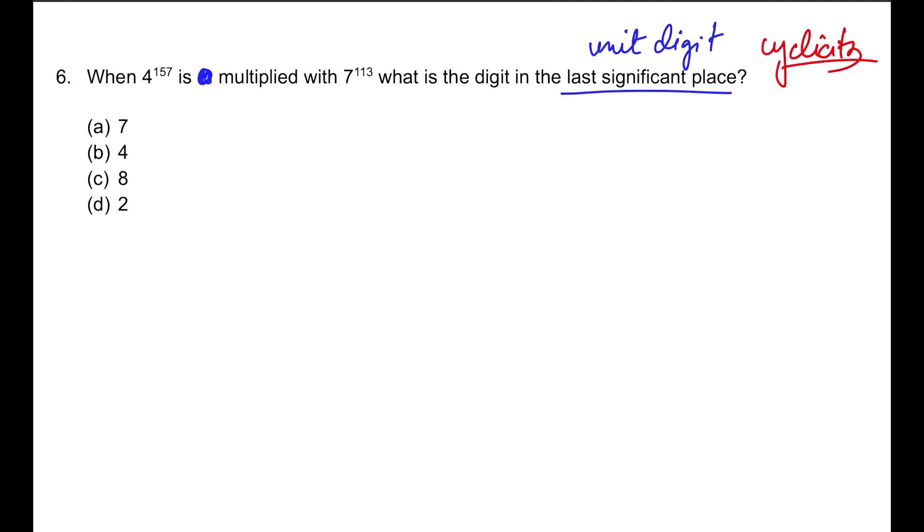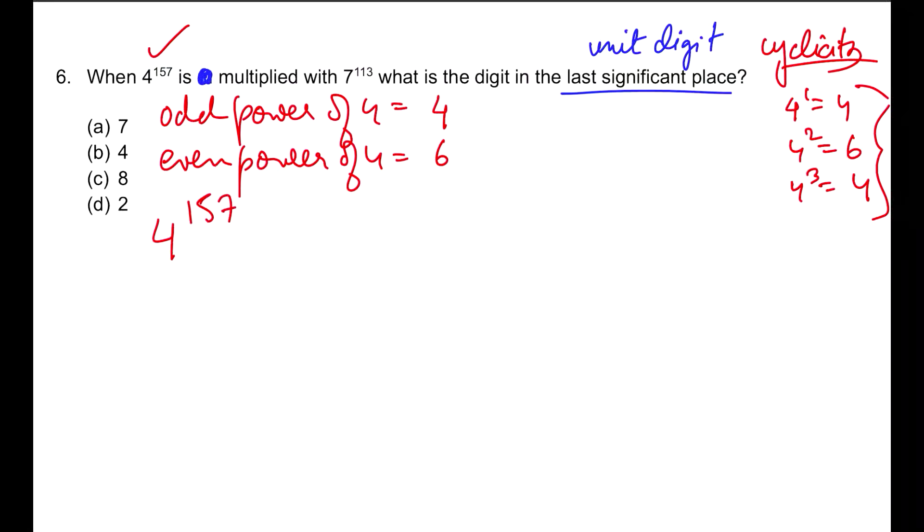Cyclicity. If you check the powers of 4: 4¹=4, 4²=16 ends in 6, 4³=64 ends in 4. You'll see a repeating pattern of 4, 6, 4, 6. That means in every odd power of 4, we get the last digit as 4, and for every even power of 4, we get the last digit as 6. As per this question, 4^157, 157 is odd, so the last digit would be 4.